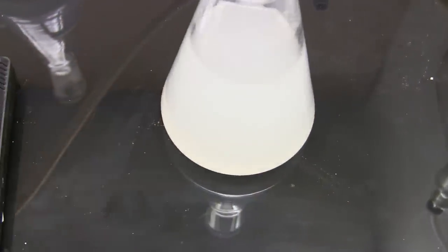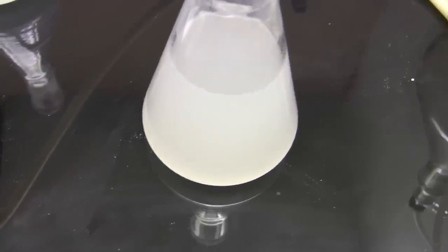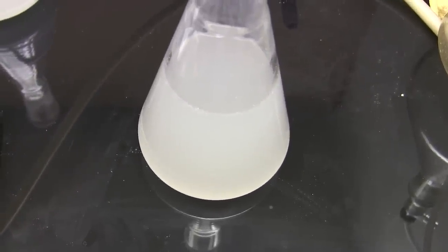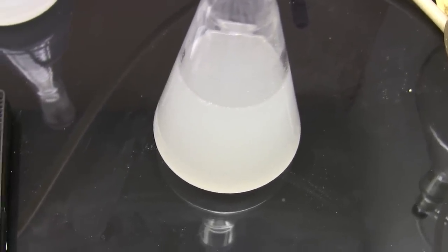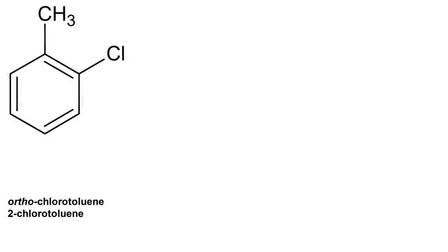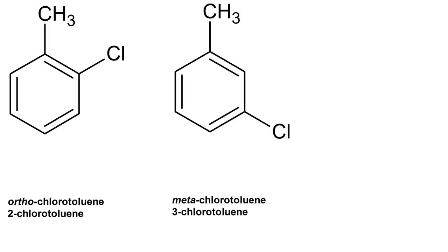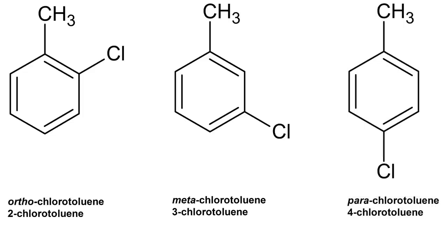And there you have it, two ways of making chlorotoluene. Now the chlorination of toluene actually forms different isomers of chlorotoluene all with very similar properties. Ortho-chlorotoluene where the chlorine is next to the methyl group, also known as 2-chlorotoluene. Meta-chlorotoluene where the chlorine is another carbon over and also called 3-chlorotoluene. And para-chlorotoluene where the chlorine is furthest away from the methyl group, this is also known as 4-chlorotoluene.